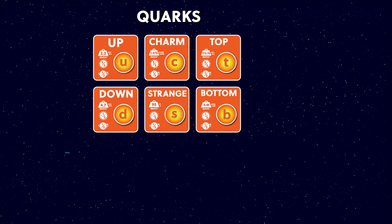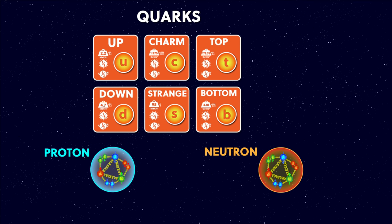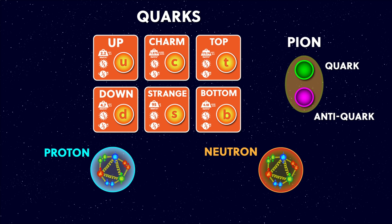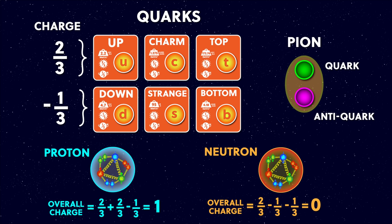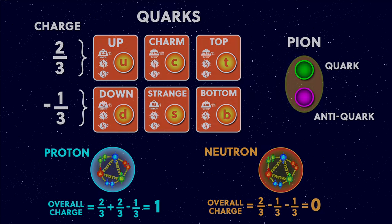The up and down quarks make protons and neutrons which make up all of the elements. But quarks can also be joined together in other configurations like a pion, which is a particle made of a quark and an anti-quark pair. These quarks all carry electric charge, but they have different amounts: these ones have a charge of two thirds, and these have a charge of minus one third. These all add together to give the overall charge. For example, a proton is made up of up-up-down quarks, and so has an overall charge of plus one. But a neutron is made up of up-down-down quarks, where the charges all cancel out for an overall charge of zero. Charge is another quantity that's conserved in particle interactions.